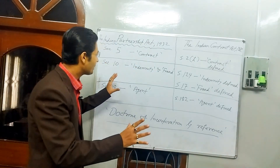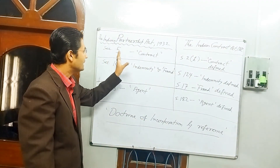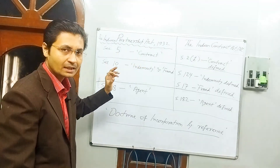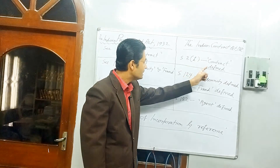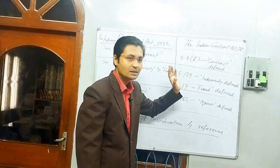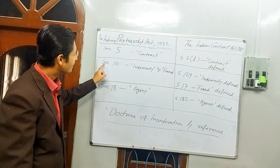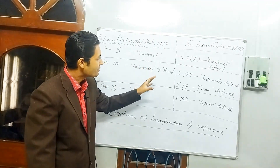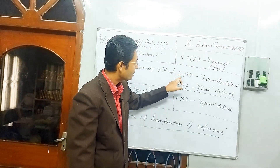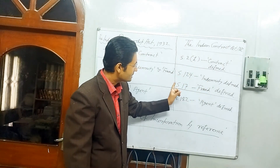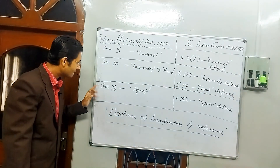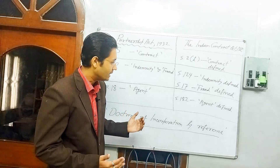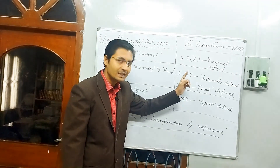In the comparative table: Section 5 of the Indian Partnership Act uses the word 'contract,' which is undefined there, but defined in Section 2(h) of the Indian Contract Act. Section 10 of the Indian Partnership Act uses the terms 'indemnity' and 'fraud,' undefined in the Act, but defined by Section 124 and Section 17 respectively of the Indian Contract Act. Section 18 of the Partnership Act uses the word 'agent,' undefined there, but defined in Section 182 of the Indian Contract Act.